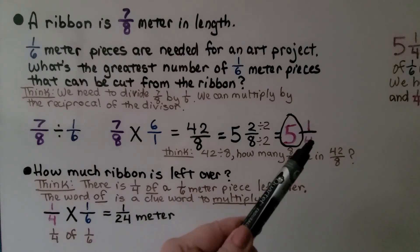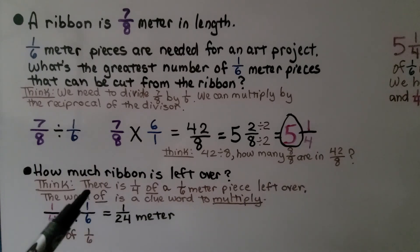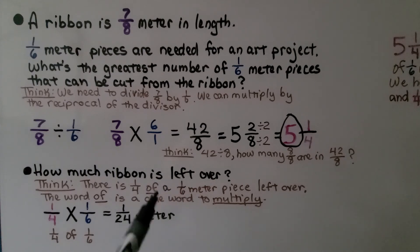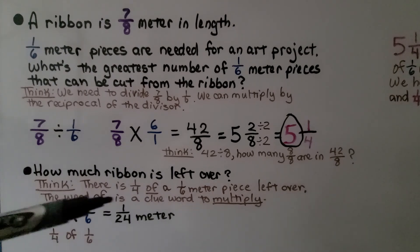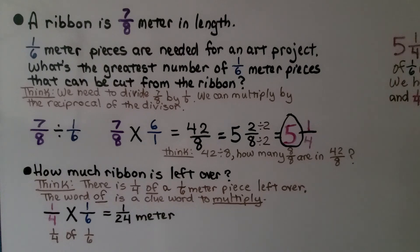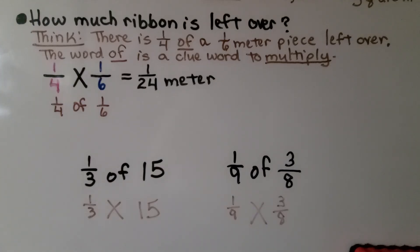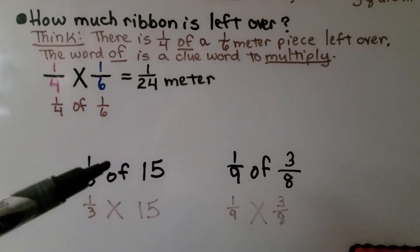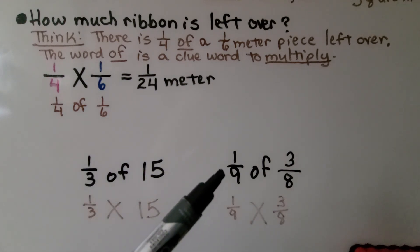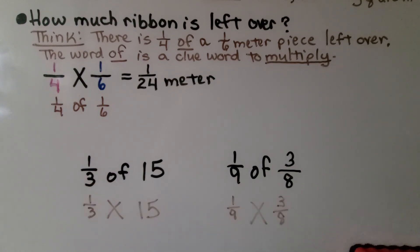We have one-fourth of one-sixth meter piece left over. The word 'of' is a clue word to multiply — you need to remember that. If it says one-fourth of a number, that means one-fourth times that number. We do one-fourth times one-sixth for one-fourth of one-sixth, and multiplying straight across we get one-twenty-fourth meter. So if you see one-third of fifteen, it means one-third times fifteen. If you see one-ninth of three-eighths, it means one-ninth times three-eighths.